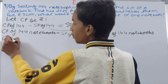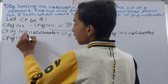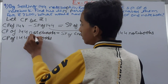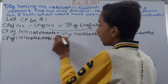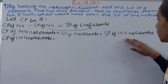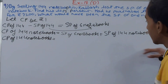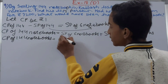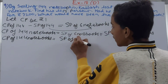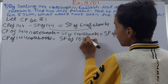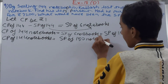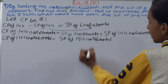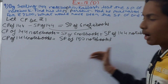So CP of 144 notebooks equals SP of 6 plus 144 notebooks, which is SP of 150 notebooks. So CP of 144 notebooks equals the selling price of 150 notebooks.